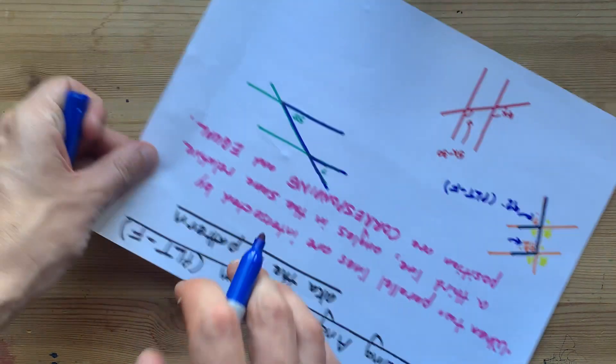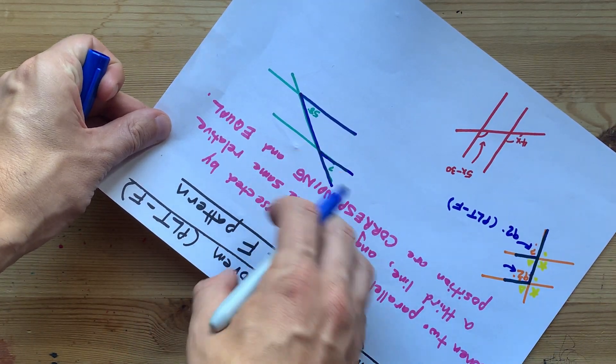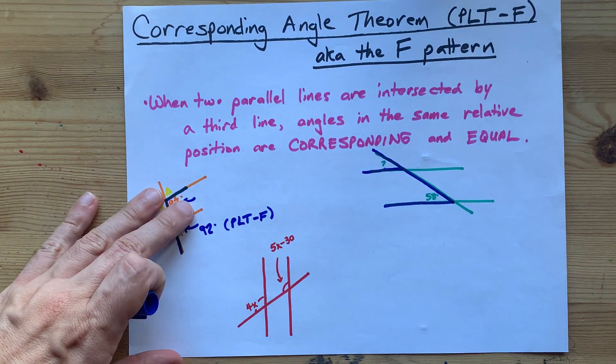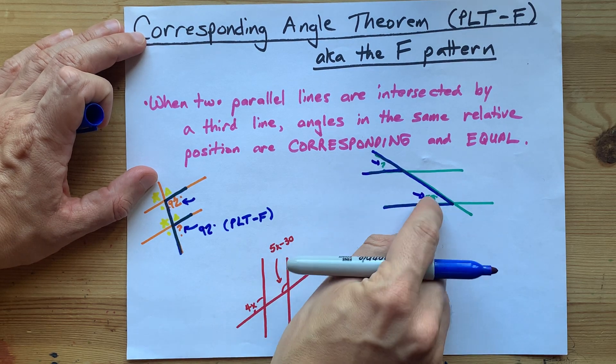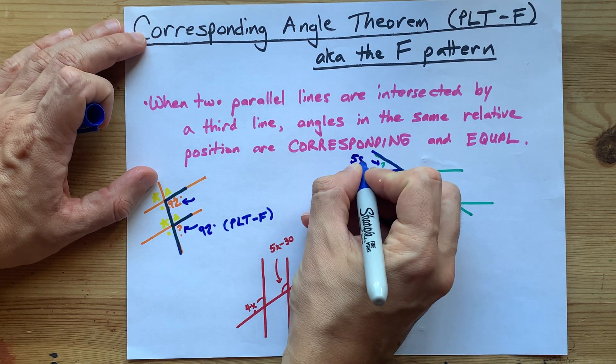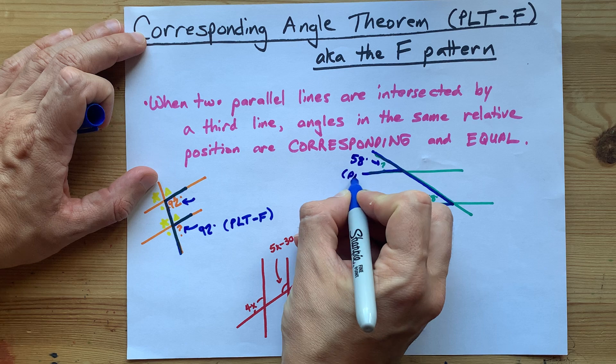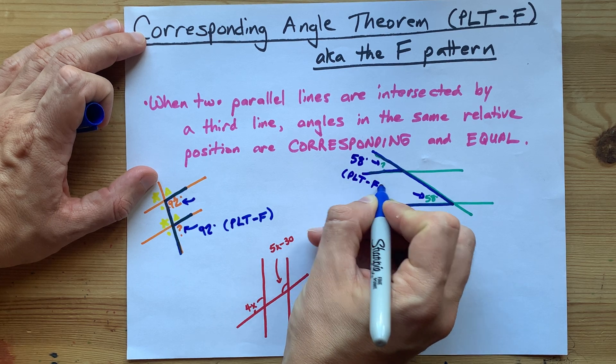You can kind of see that there's an F there. In fact, if I rotate this, now you can see the F, right? The inner corners of that F have to be the same size. So if that one was 58 degrees, that one was 58 degrees. PLT-F.